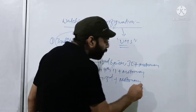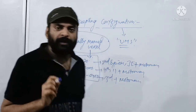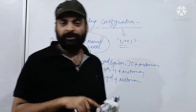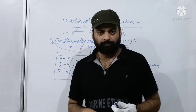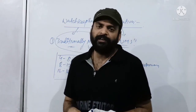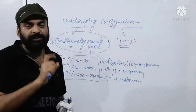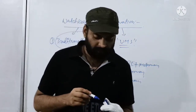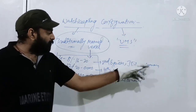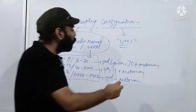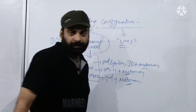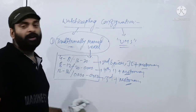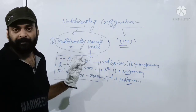In traditionally manned vessels, most ships have a minimum of 2 and maximum of 3 motormen. The full engine crew consists of: one chief engineer, one second engineer, one third engineer, one or two fourth engineers, one junior engineer or engine cadet, three motormen — motorman 1, motorman 2, and motorman 3 — one wiper, and one engine fitter. This is our traditionally manned vessel watchkeeping configuration.